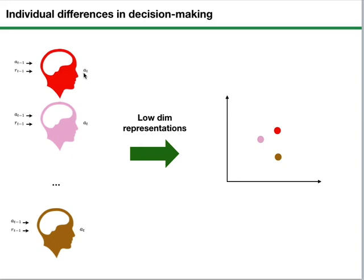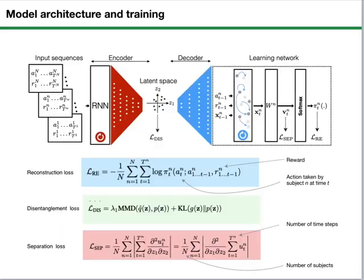And given the observations from these different dynamical systems, we want to find a low-dimensional representation for the spatial dynamical systems behind how different people make decisions. This is the architecture that we have proposed.